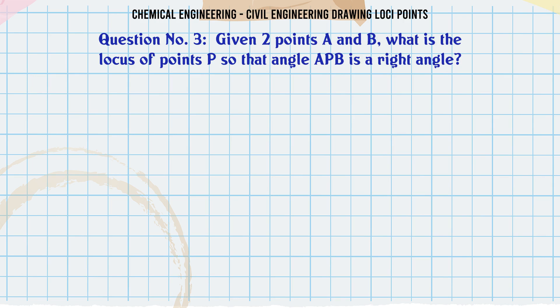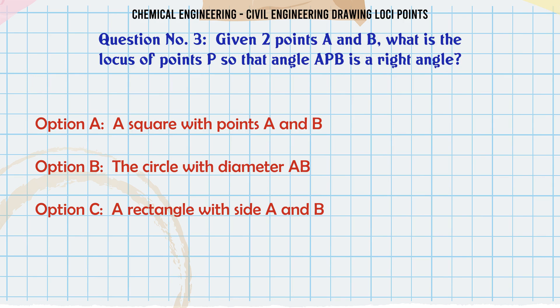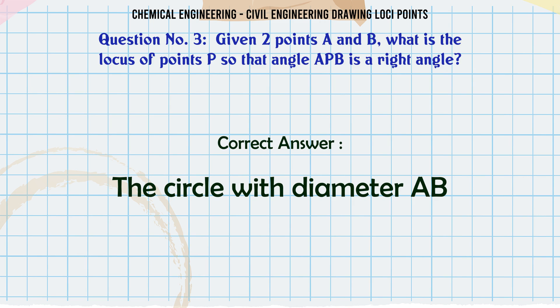Given two points A and B, what is the locus of points P so that angle APB is a right angle? a) A square with points A and B. b) The circle with diameter AB. c) A rectangle with sides A and B. d) A semicircle with diameter AB. The correct answer is the circle with diameter AB.